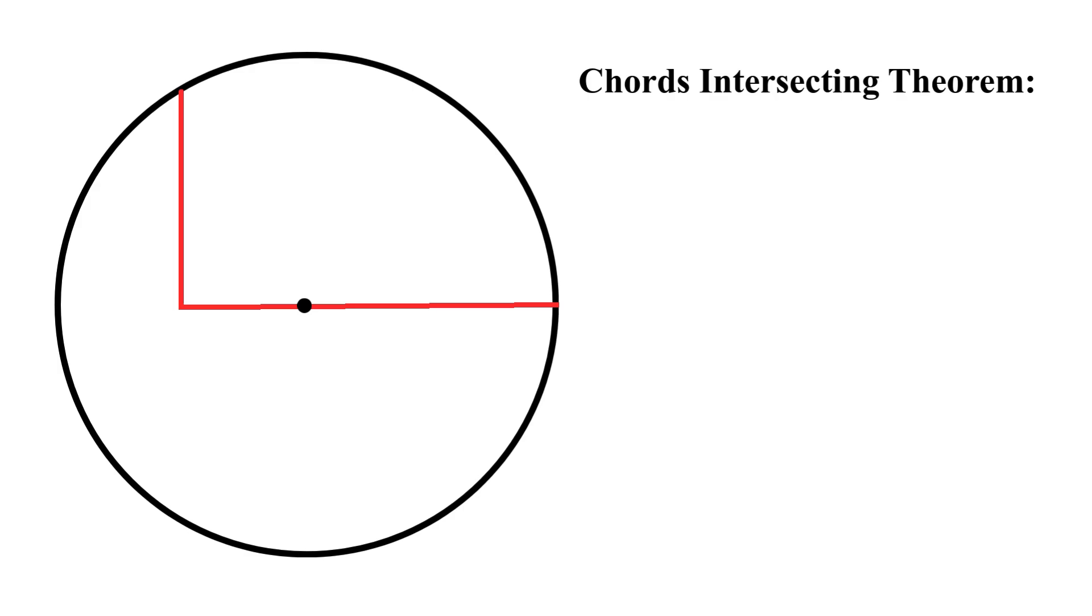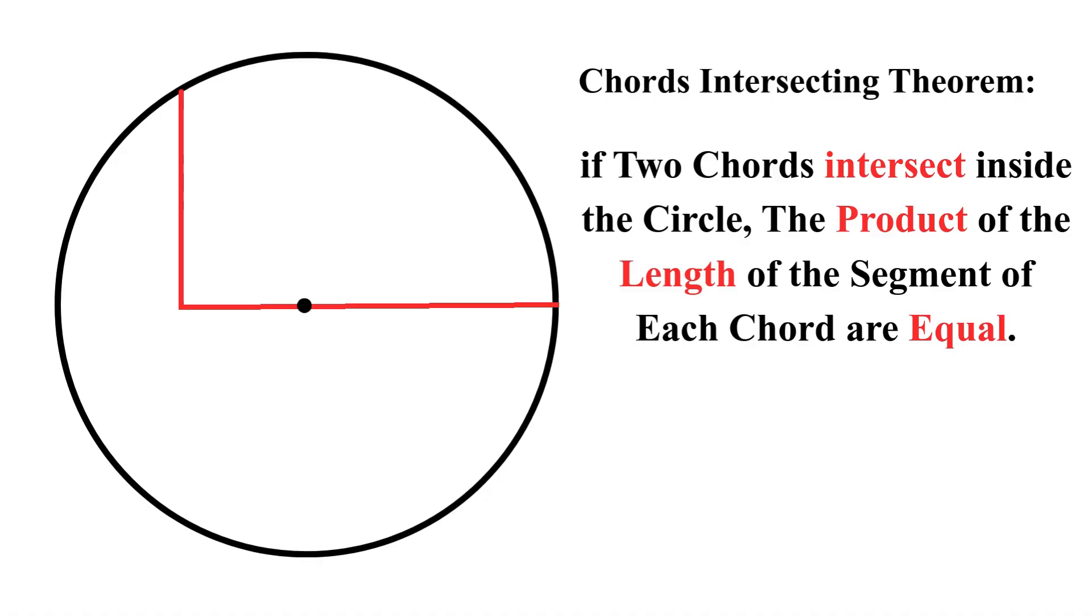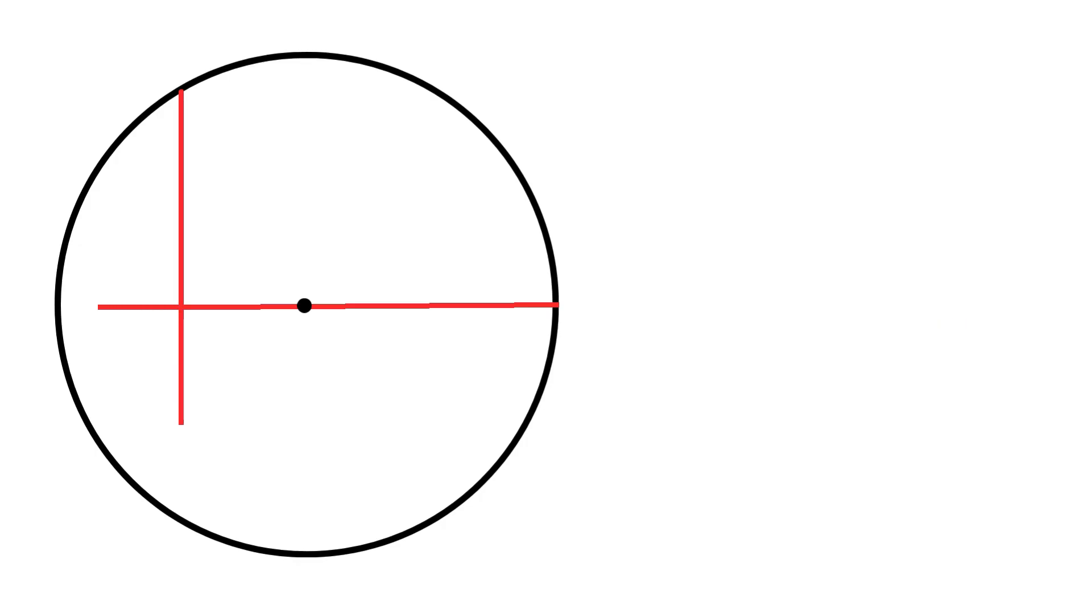The Chord Intersecting Theorem states that if two chords intersect inside a circle, the products of the lengths of the segments of each chord are equal. To apply this theorem, we extend these two line segments until they become chords of the circle.